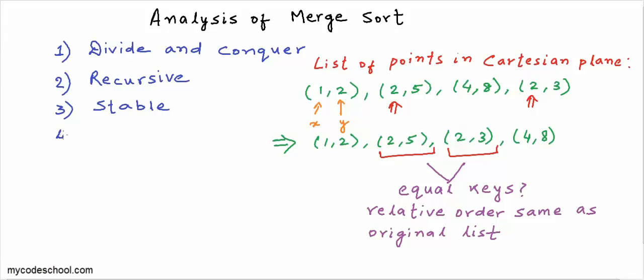The next property is that merge sort is not an in-place sorting algorithm. An in-place sorting algorithm takes a constant amount of extra memory. Previous algorithms like bubble sort, insertion sort, and selection sort used only some temporary variables, so extra space was not dependent on the size of the list. But in merge sort, when we divide an array into sublists — left and right — we create two entirely new arrays, so the extra space is proportional to the size of the list.